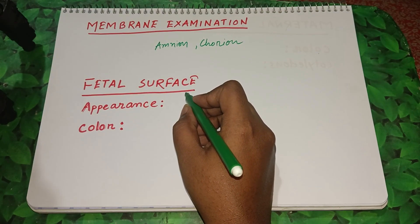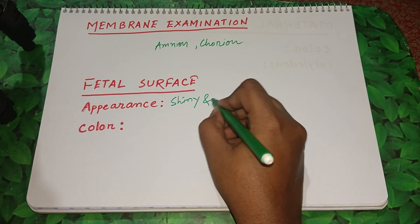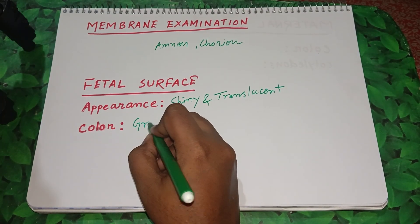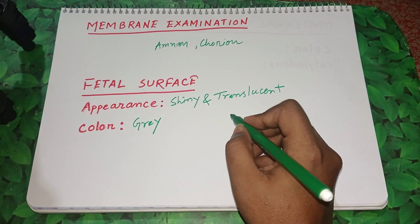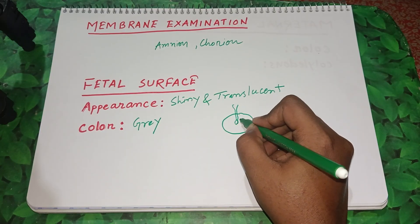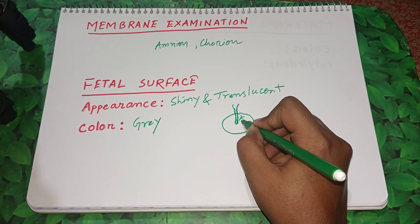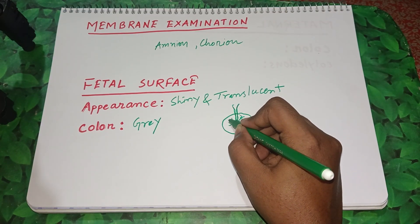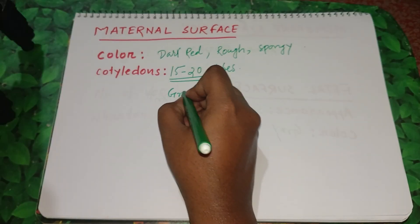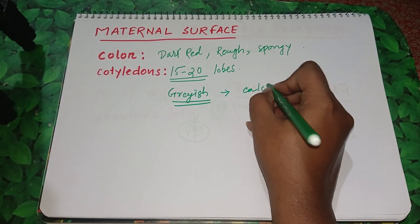Next, we will examine the fetal surface. The fetal surface appearance is shiny and translucent. Its color is usually gray. We can see that the umbilical cord insertion is at the center, and the umbilical vessels radiate around the insertion site. If we see grayish spots on this surface, that signifies calcium deposition.